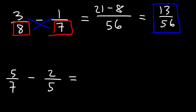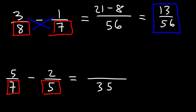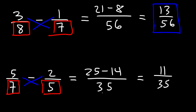Now for the next example, let's multiply 7 and 5. 7 times 5 is 35. 5 times 5 is 25. And then we have 7 times 2, which is 14. So now let's subtract 25 and 14. 25 minus 14 is 11. And so this is going to be 11 over 35.